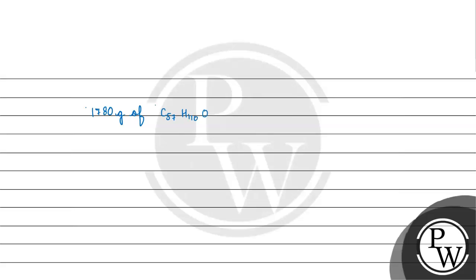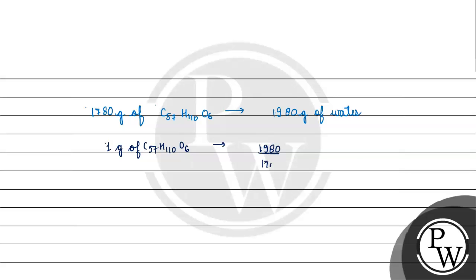So 1,780 grams of C57H110O6 gives 1,980 grams of water. If we have 1 gram of C57H110O6, it gives 1,980 divided by 1,780 grams of water.